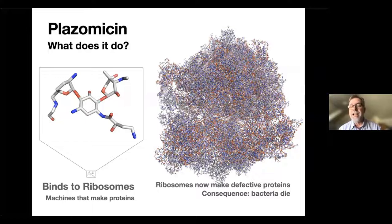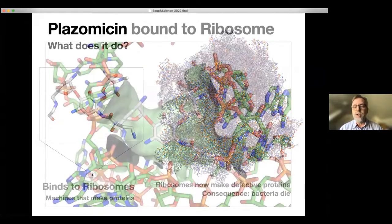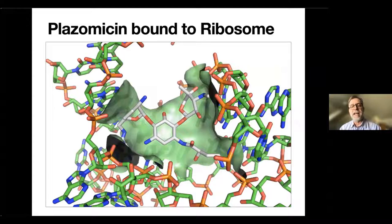Just to see the scale here on the right, you can see the whole ribosome, and you can see how small this little tiny drug is. If we completely zoom in there, this is how plazomicin sits in the ribosome, and once it sits there, the ribosome works improperly, makes the wrong proteins. The bacteria do not like it, and they die.